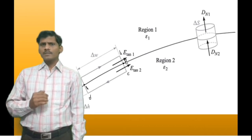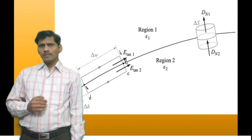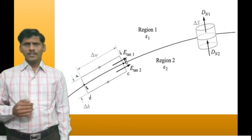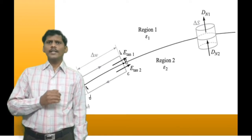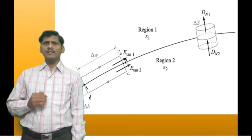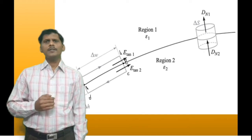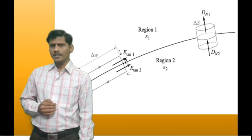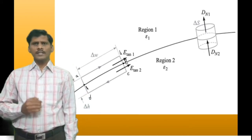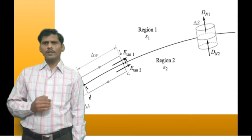So let us find the boundary conditions. To determine the boundary conditions, we will use a closed rectangular path and a Gaussian surface, as shown in the figure.